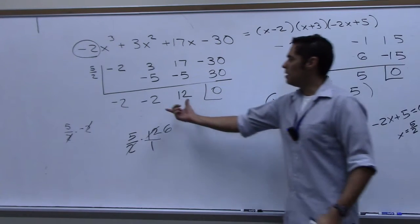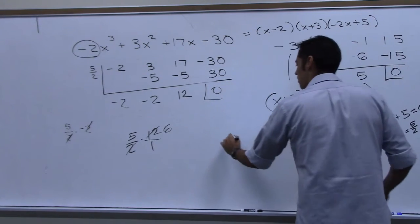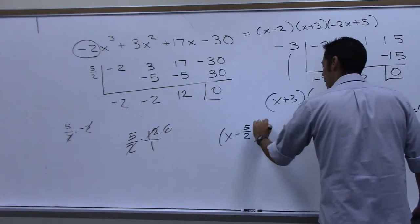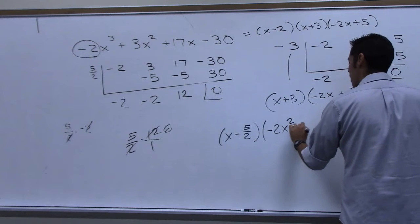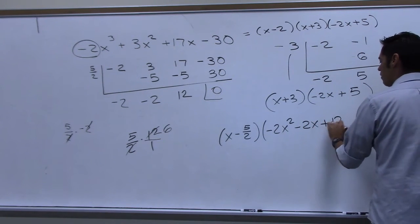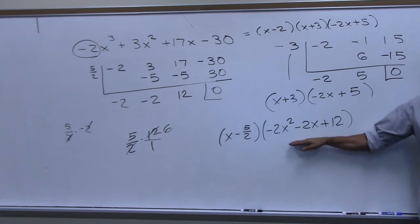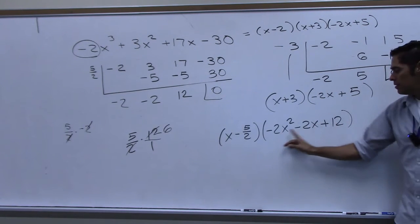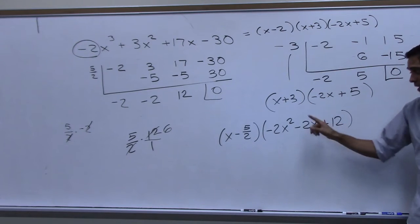And then what's left here, let's see what would be left. We'd have an x minus five halves, we would have a negative two x squared minus two x plus twelve, and then you'd be left to factor this. So you pull, let's pull a greatest common factor out of this. What number can come out of both? Negative two?